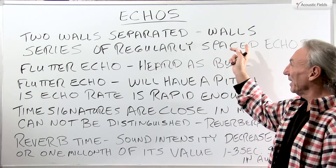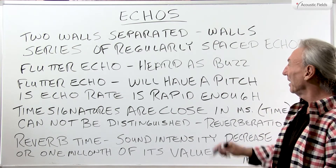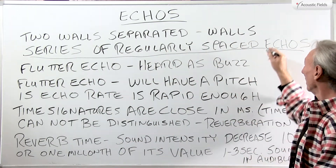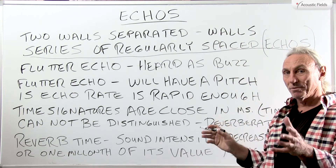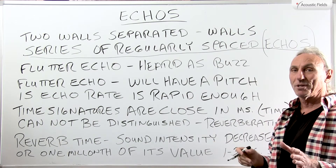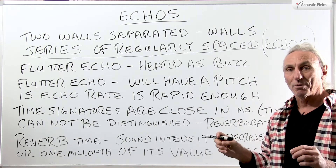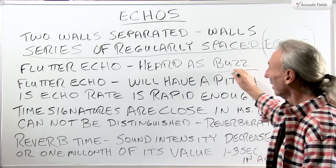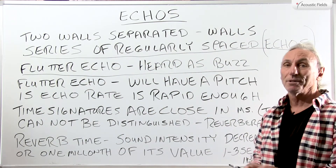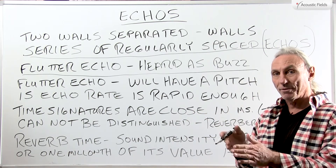Echoes come from two walls separated. We all have walls in our environment where we listen to music and communicate. If we have walls, we're going to get a series of regularly spaced echoes. I want you to get a feel for the definition of an echo because we're going to add all those together to get something called reverberation. We've all heard the term flutter echo — flutter echo is echo; it's a sister or brother of an echo, and it's really confined to smaller spaces at higher frequencies.